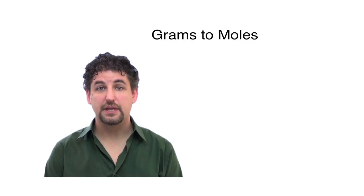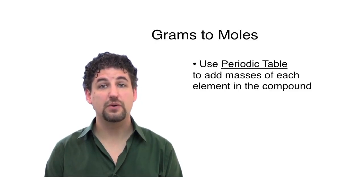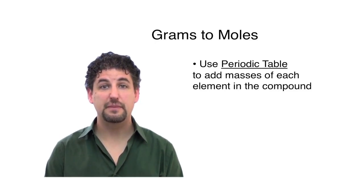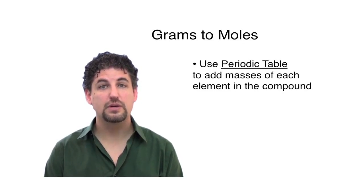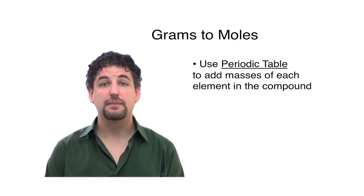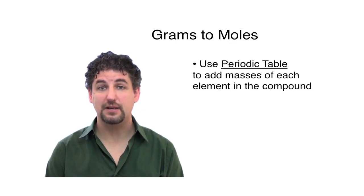Because we involve grams, you need a periodic table. So if you don't have one handy, find one from the back of your textbook. It's usually on the inside cover, or you can easily download a periodic table from the web. But make sure you have one handy, because you need to add the masses of the elements in the substance that you're dealing with.